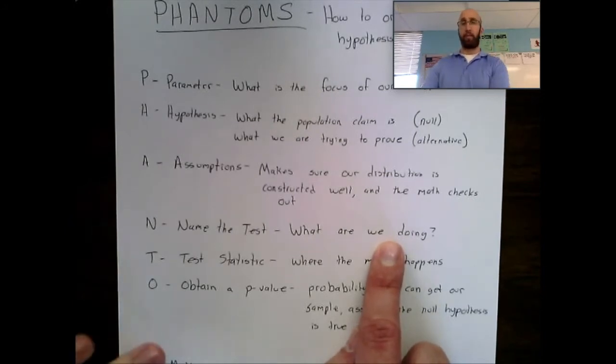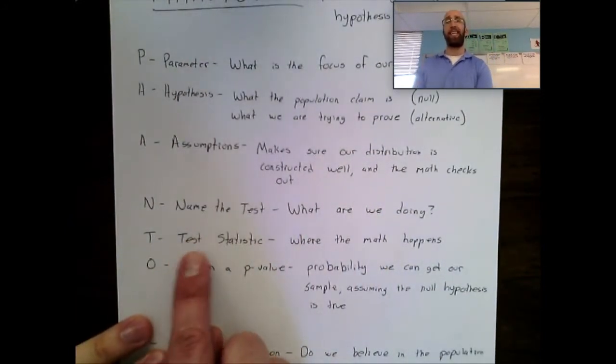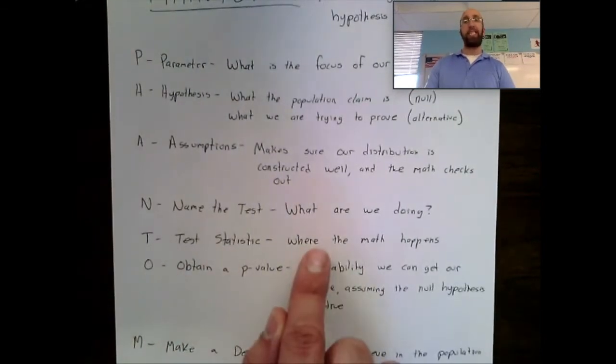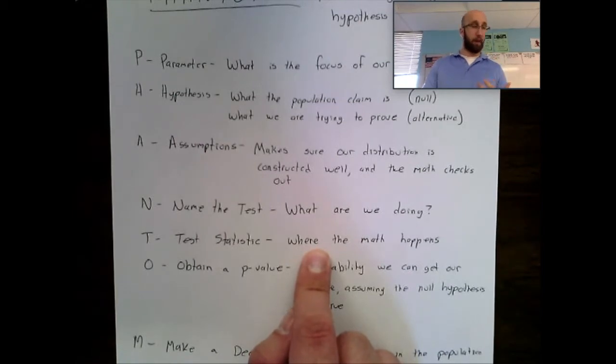After we name what test we are doing, we're going to move on to T, which is the test statistic part. This is where the math happens. The different formulas we have for our various different hypothesis tests, this is where the math happens, and we're going to do that here.